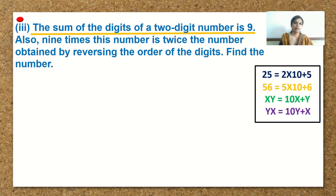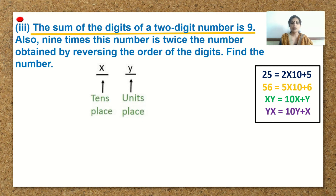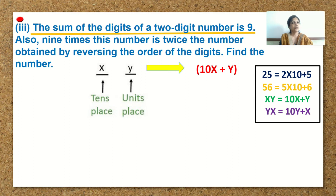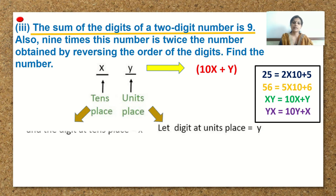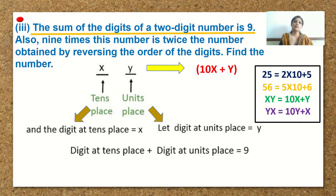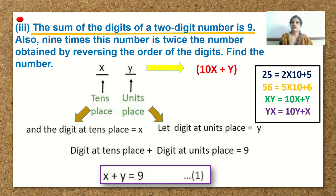We are given a two-digit number. We will consider y at the unit's place and x at the 10's place, so the number is 10x plus y. According to the sum, the sum of the two digits — the 10's place digit plus the unit's place digit — is given as 9. So, we write x plus y is equal to 9 as equation 1.